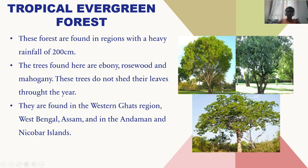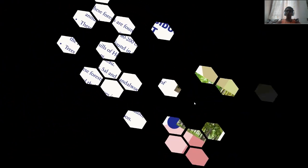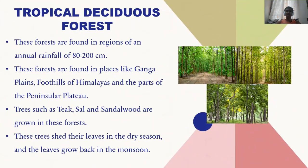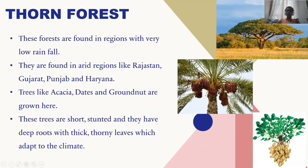Now let's know about tropical deciduous forests. These forests are found in regions with an annual rainfall of 80 to 200 centimeters. They are found in places like the Ganga plains, foothills of the Himalayas, and parts of the peninsular plateau. Trees such as teak, sal, and sandalwood are grown in these forests. These trees shed their leaves in the dry season and the leaves grow back again in the monsoon season when it's raining.